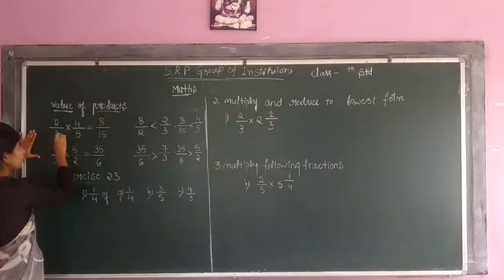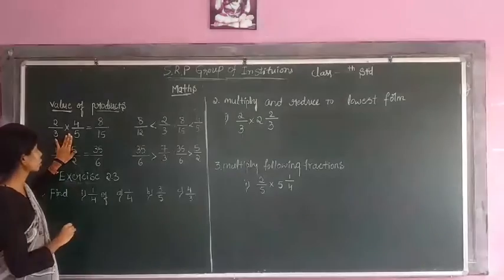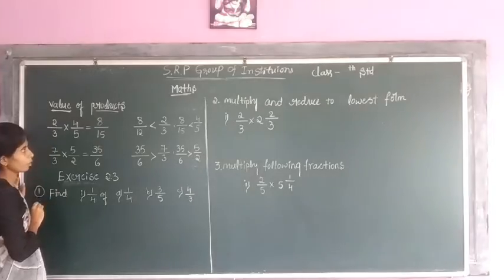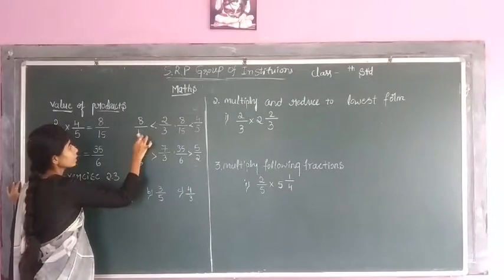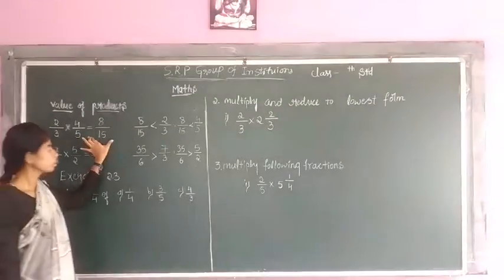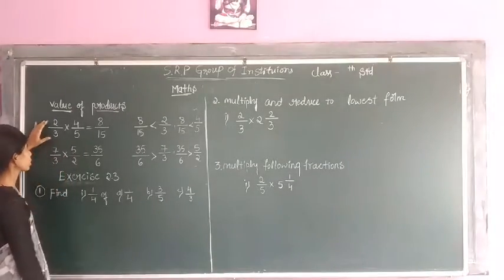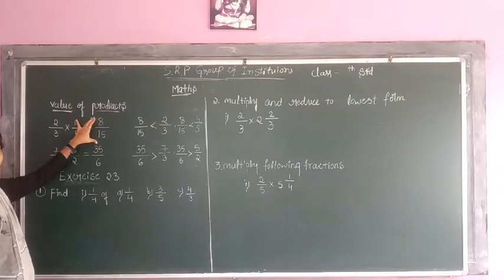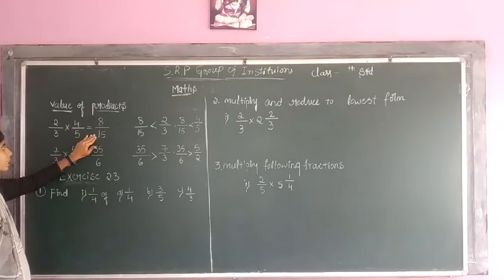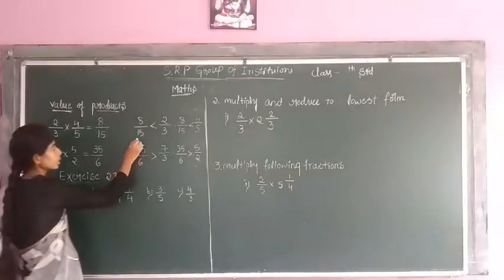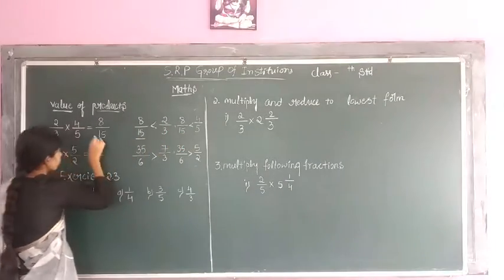Observe here. If we multiply a fraction by a fraction, we are getting some product. If the product is a proper fraction, then it is less than these two fractions. That is, the product is lesser than the two original fractions.